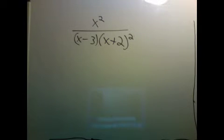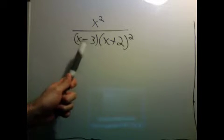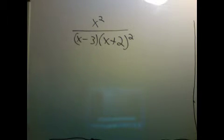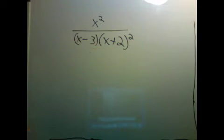Alright, so we just saw how to integrate this, and the reason we can do it is because it only has linear factors in the bottom. So they're not distinct because we have a square here, and we saw how to deal with that.